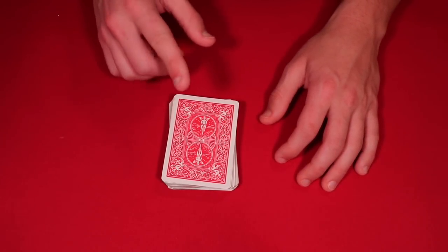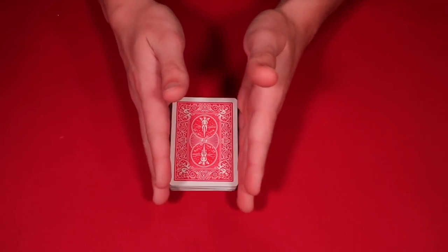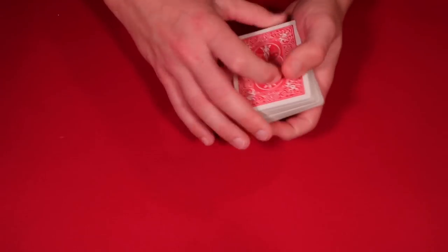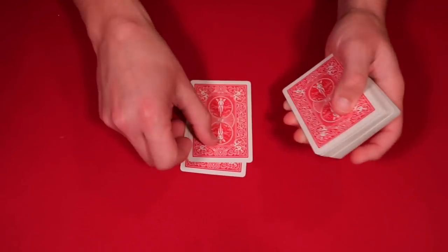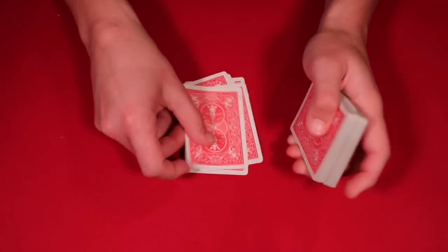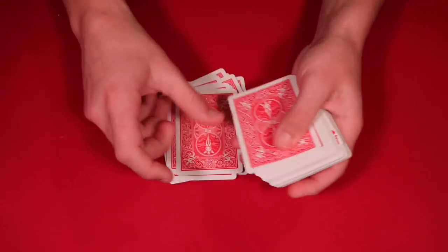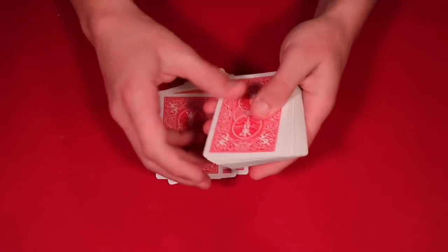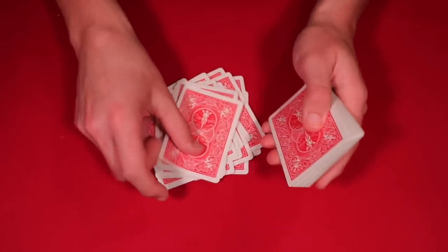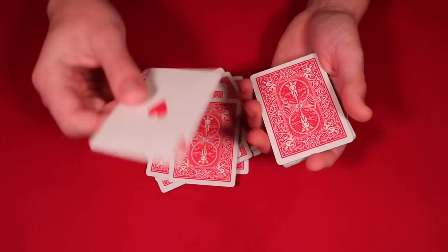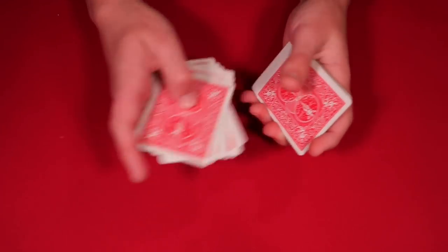But you can go one step further. You know what, you could have cut to any number of cards, but I believe you cut to the 28th card in the deck. So what you do is show your spectators. You can count down 1, 2, 3, 4, 5, 6, 7, 8, 9, 10, 11, 12, 13, 14, 15, 16, 17, 18, 19, 20, 21, 22, 23, 24, 25, 26, 27, and the 28th card is the ace of hearts.